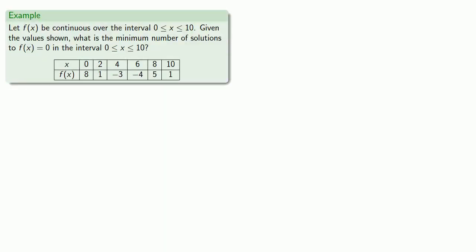To give you some idea of how fantastically useful this is, suppose f is continuous over the interval between 0 and 10. And suppose that, besides being continuous, the only thing you know about f are its values at a couple of selected locations in that interval. Based on this information alone, we can tell how many solutions there are going to be to f(x) equals 0 in this interval. Since our function is continuous, we can apply the Intermediate Value Theorem.